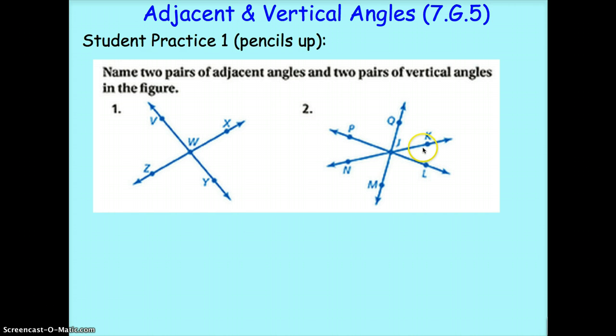Okay, and then on problem number two, adjacent angles, any of these that are touching would work. So I'll just read off some examples. For example, Q, J, P and P, J, N. Or M, J, L and L, J, K. As long as your angles are touching and they have the vertex of J, meaning the letter J has to be in the middle, then they are adjacent angles.